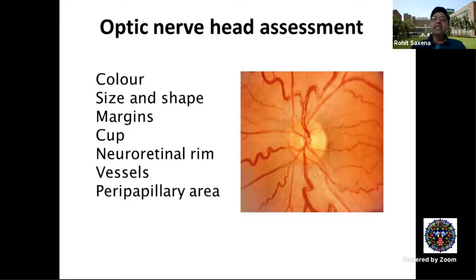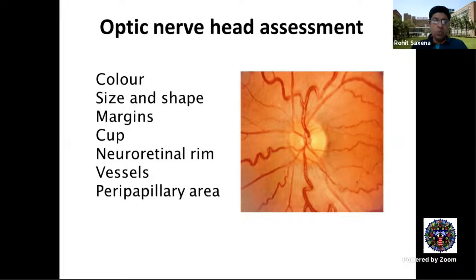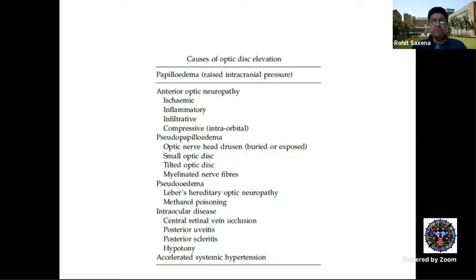After dilating the pupil, always assess the optic nerve head with binocular slit-lamp biomicroscopy — never rely on a uniocular assessment like a direct ophthalmoscope. Use a 90D or 78D lens. For the disc, evaluate color, size, shape, margins, cup size, neuroretinal rim, vessels as they emerge, and the peripapillary area. Optic nerve head assessment is a key component of evaluating optic nerve function.